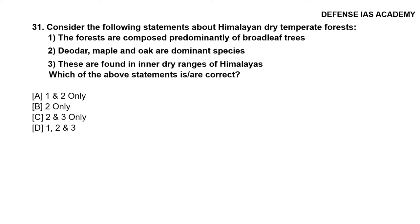Question 31: Consider the following statements about Himalayan dry temperate forest: 1. The forests are composed predominantly of broadleaf trees; 2. Deodar, maple and oak are dominant species; 3. These are found in the inner dry ranges of the Himalayas. The correct option is option B, all three statements — 1, 2 and 3 — are correct.